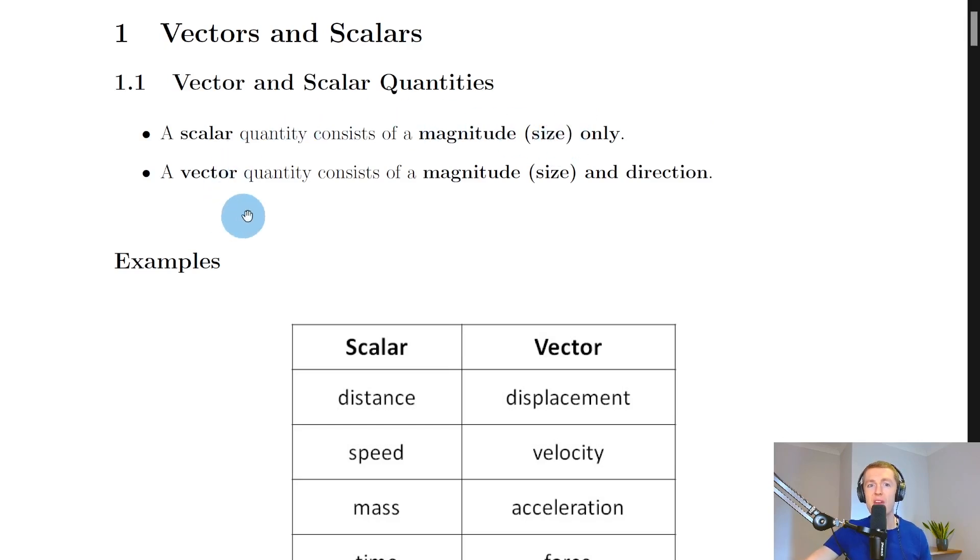However, we say that a vector quantity consists of a magnitude, i.e. a size, and a direction. So using the same example, instead of thinking about distance as a scalar, we could think about the vector equivalent of distance, which is displacement.